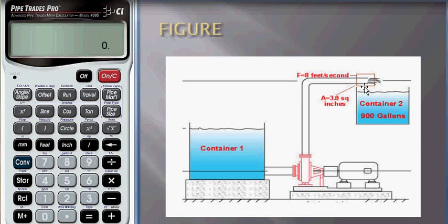The water coming from the pipe has a velocity of 8 feet per second. We need to find the time taken for the pipe to fill container 2.